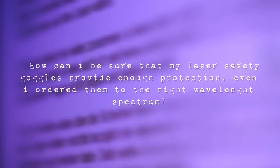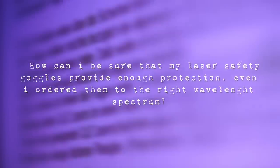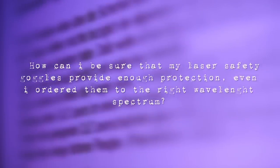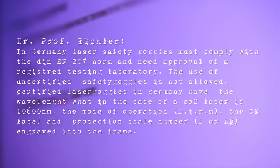How can I be sure that my laser goggles provide enough protection, even if I order them to the right wavelength spectrum? In Germany, laser safety goggles must comply with the DIN EN 207 norm and need approval of a registered testing laboratory. The use of uncertified safety goggles is not allowed. Certified laser goggles in Germany have the wavelength, what in the case of a CO2 laser is 10,600 nanometers, the mode of operation DIRM, the CE label and the protection scale number L or LB engraved into the frame. Also, the goggles must be adapted to their specific task.